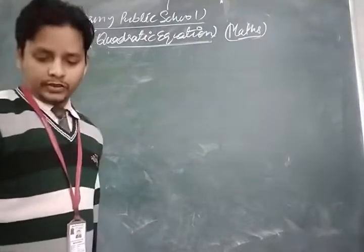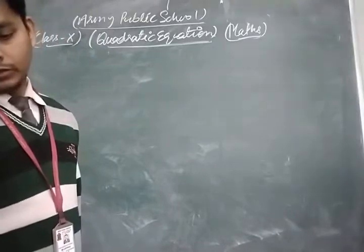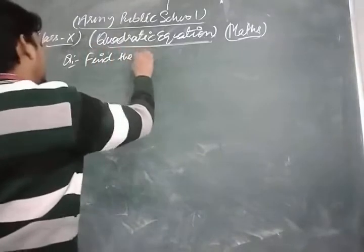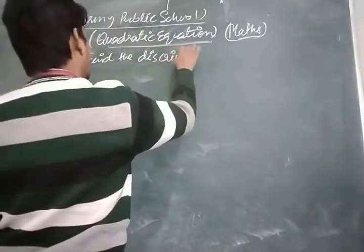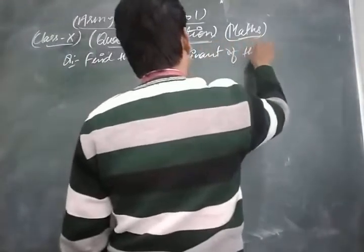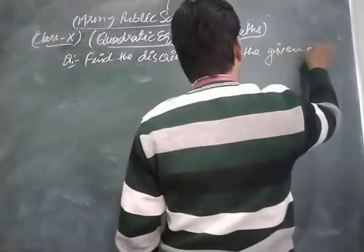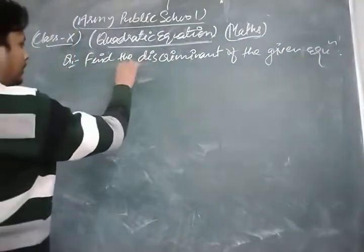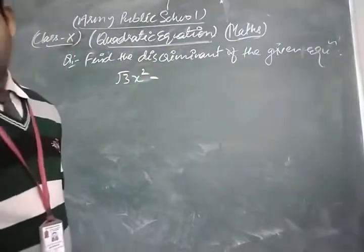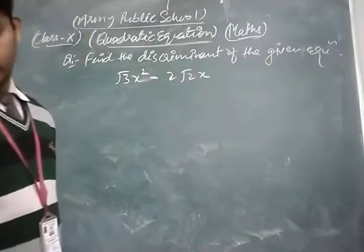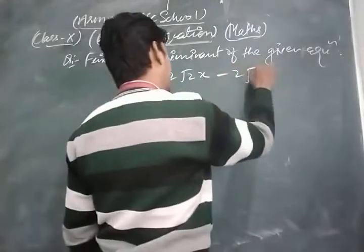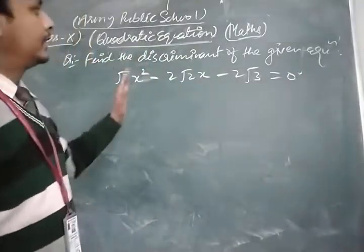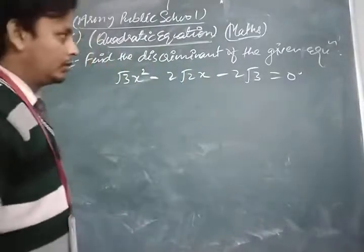Now we take some important questions. The first question: Find the discriminant of the given equation. The equation is √3·x² - 2√2·x - 2√3 = 0. Let's see its solution.